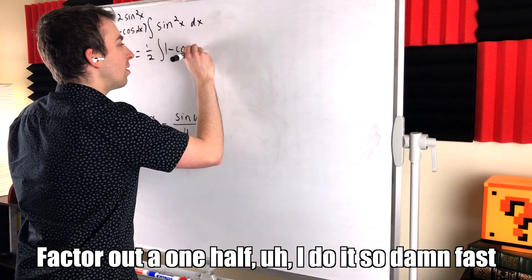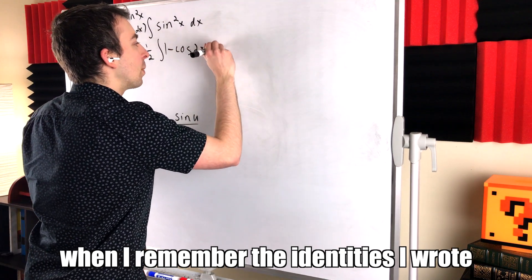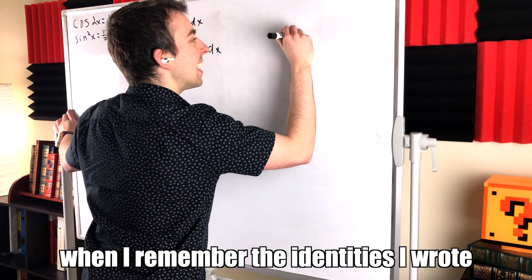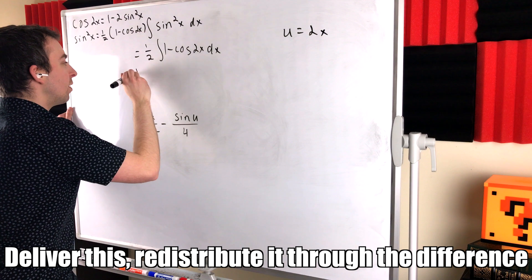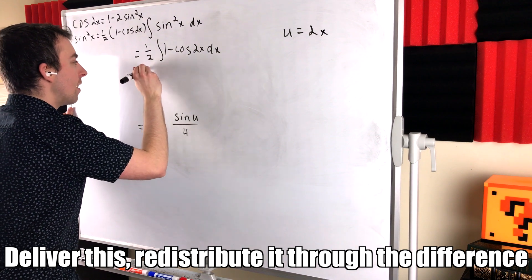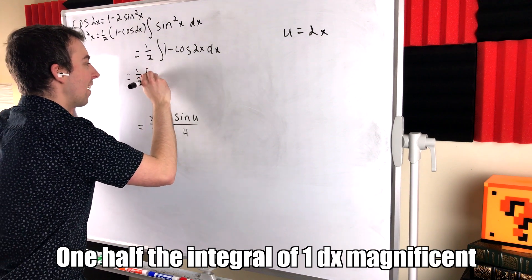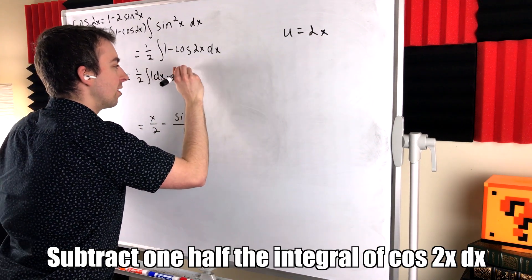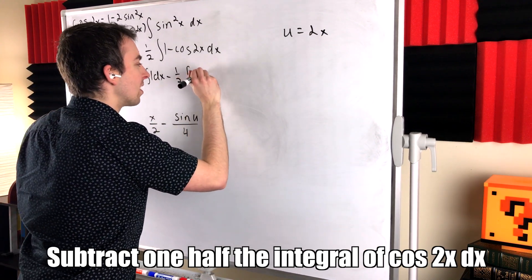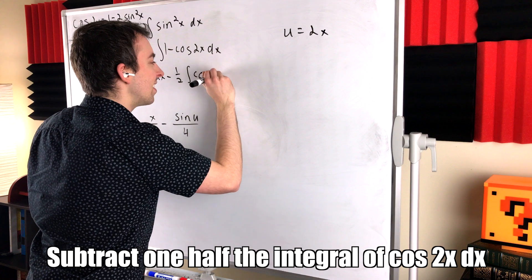I do it so damn fast. When I remember the identities I wrote with past pens. Deliver this. Redistribute it through the difference. 1 half the integral of 1 dx. Magnificent. Subtract 1 half the integral of cos 2x dx.